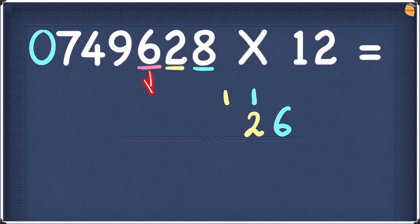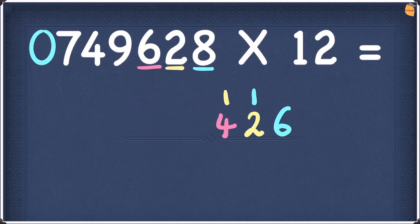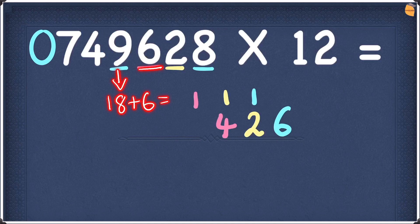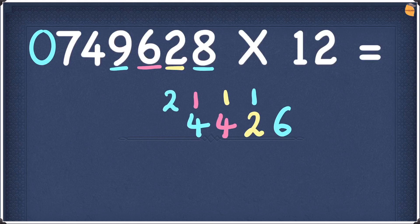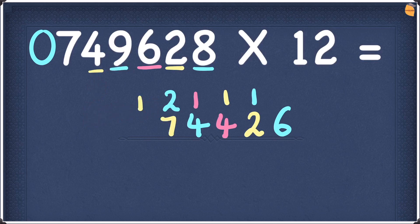Next digit is 6. Double 6 gives 12. Add 2 from the right hand side: 12 plus 2 is 14. Write the 4 and take the 1 as a carry. Next digit is 9. Doubling 9 gives 18. Add the right hand side number 6: 18 plus 6 is 24. Write the 4 and take the 2 as a carry. Next digit is 4. Double 4 is 8. 8 plus 9 is 17. Write 7 and take 1 as carry.